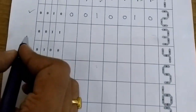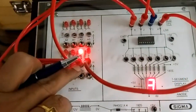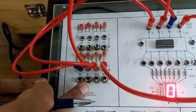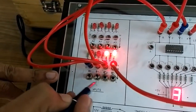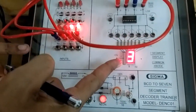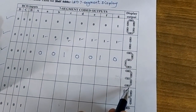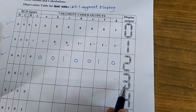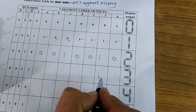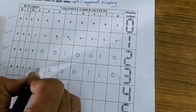The next BCD input is 0 0 1 1. MSB is 0, the next bit is 0, then 1, and 1. This corresponds to digit 3 on the display. For digit 3, segments F and E are in the off condition, and the remaining segments are in the on condition.